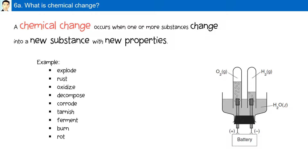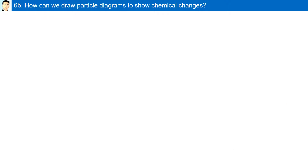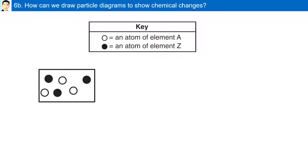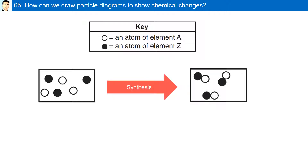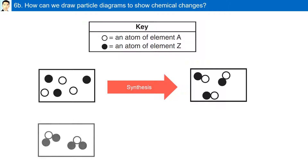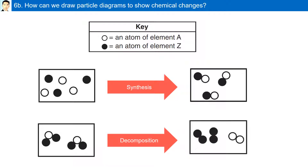The diagram on the right shows the decomposition of water into oxygen gas and hydrogen gas. In particle diagrams showing chemical changes, atoms of two different elements combine through synthesis to form compounds, which have new properties. A compound can also be broken up by decomposition into its elements, which will have new properties compared to the compound it was made from.